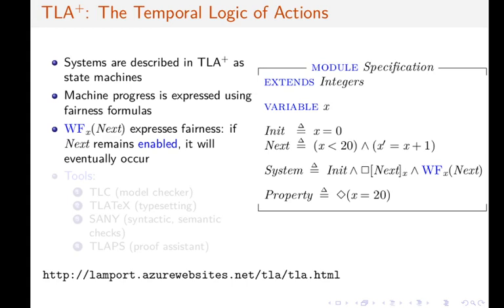The formula WF subscript x expresses fairness. In other words, if Next remains enabled, then it will eventually occur. This is the rough meaning of this formula.